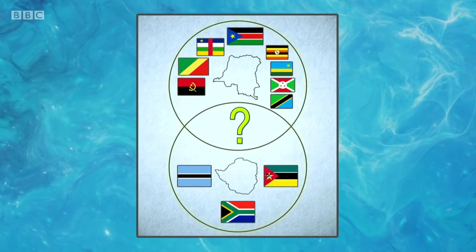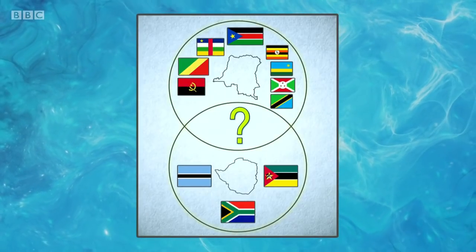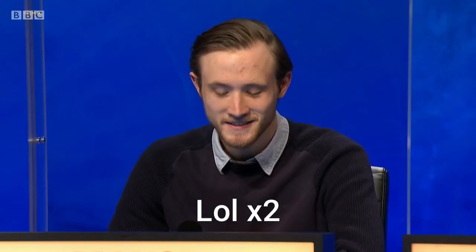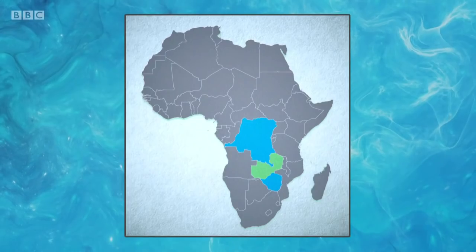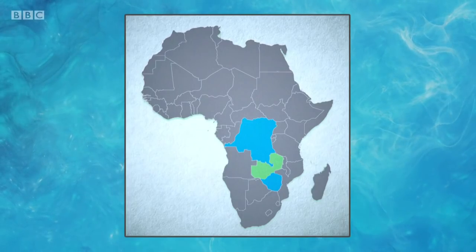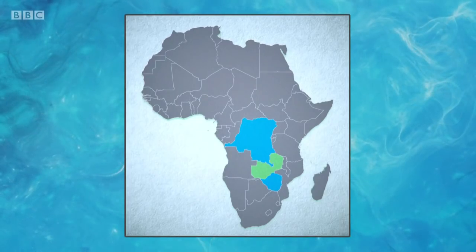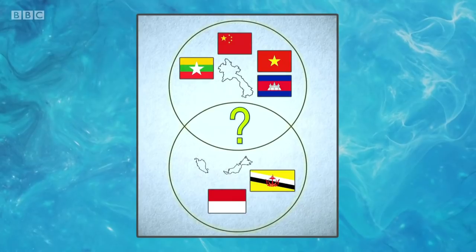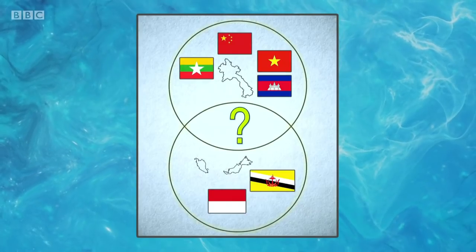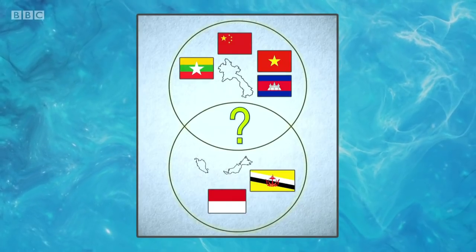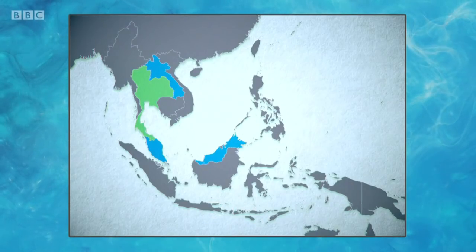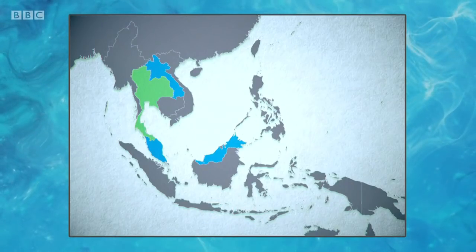Second Venn diagram: Congo and Zimbabwe — the shared neighbour is Zambia. Zambia is correct, between the DRC and Zimbabwe. Finally: Laos and Malaysia — the shared neighbour is Thailand. Thailand is correct, between Malaysia and Laos. Well done.